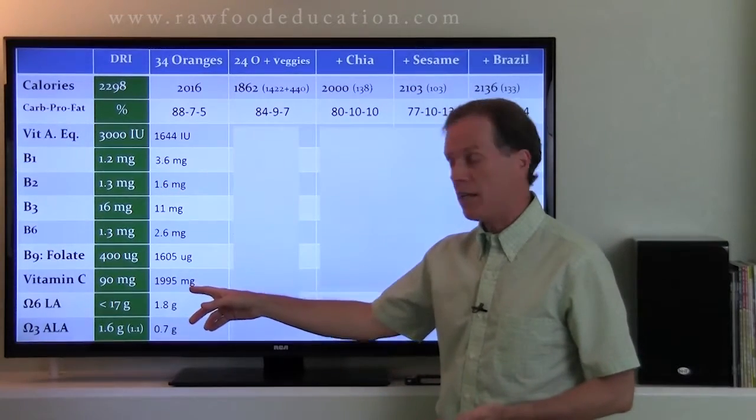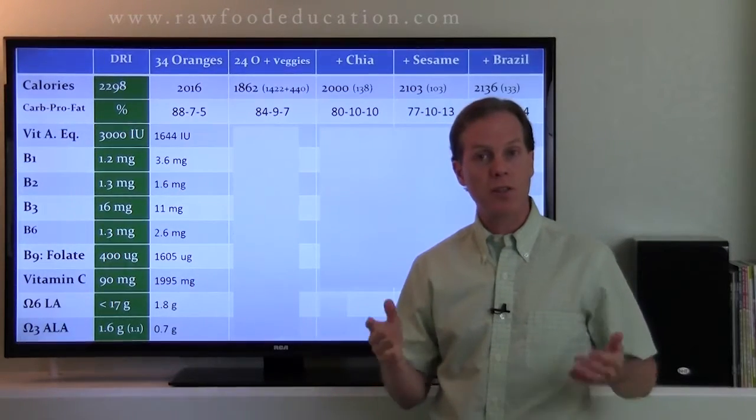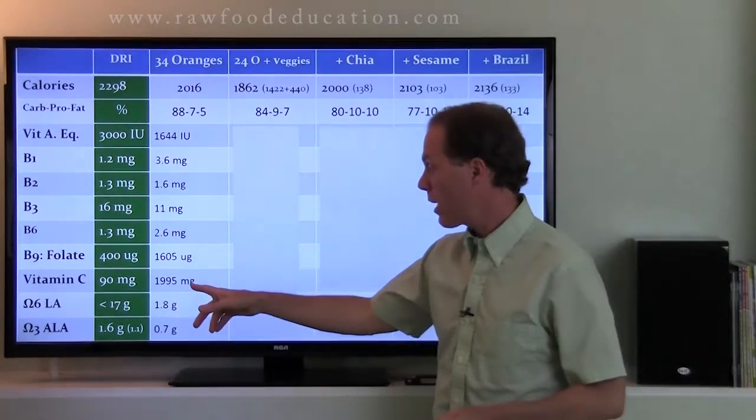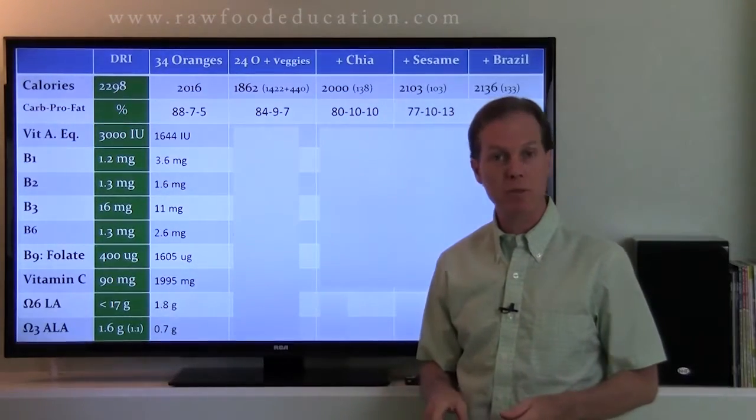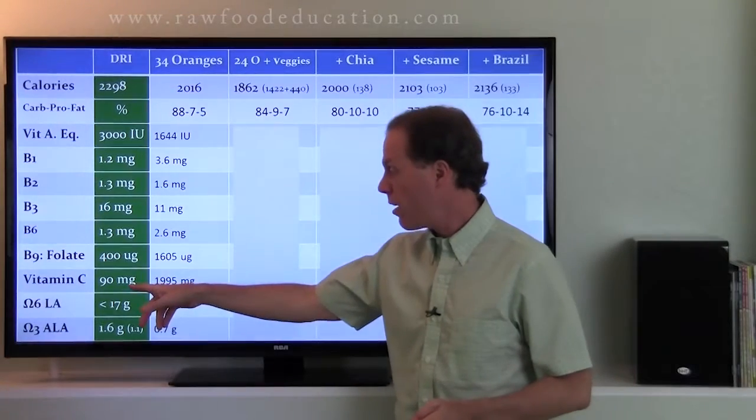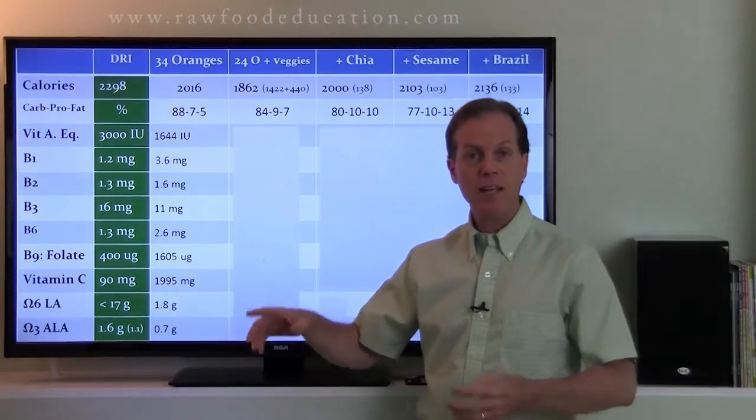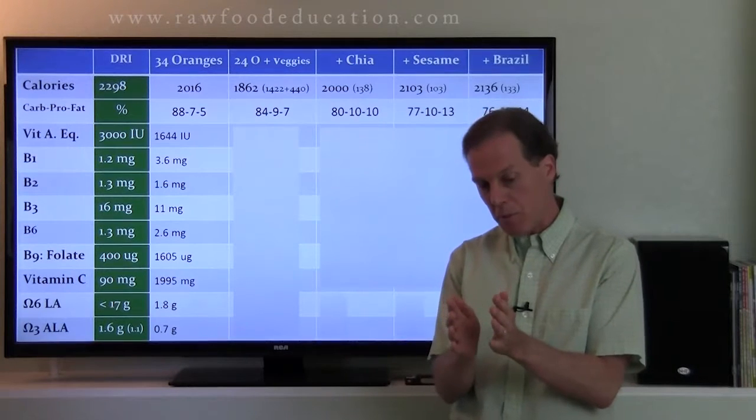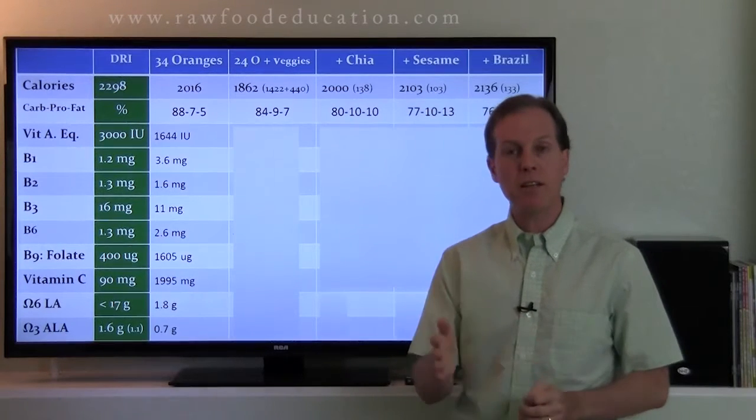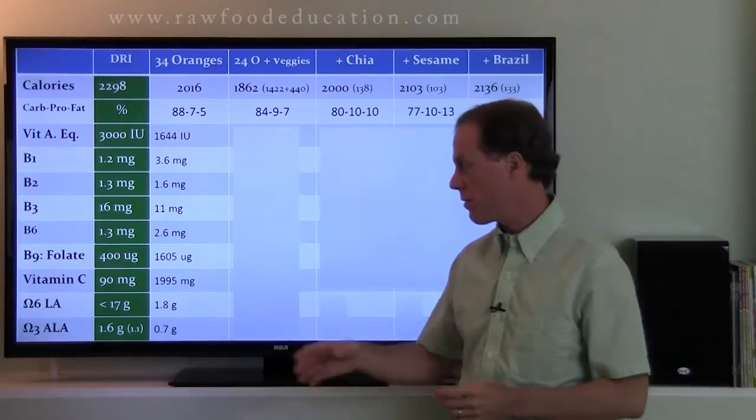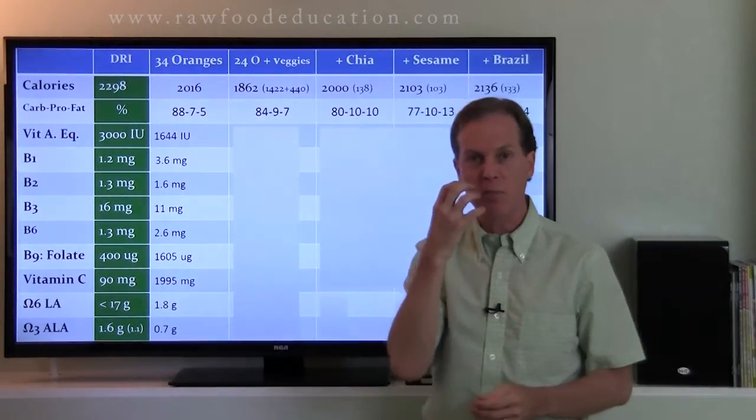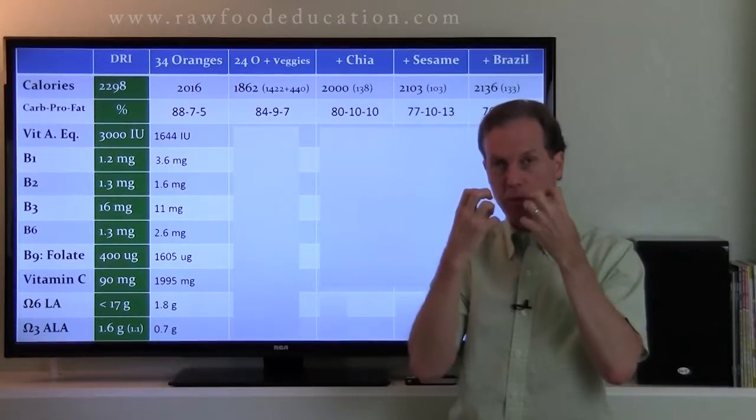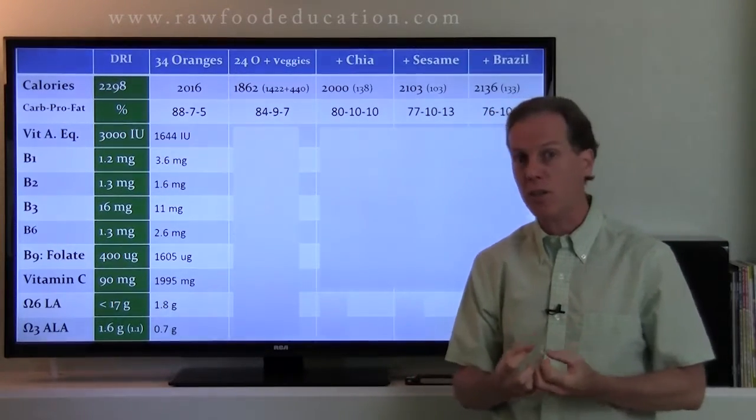Vitamin C—well we've all heard that oranges are an excellent source of vitamin C and that's absolutely true. Got about 2000 milligrams of vitamin C. The DRI is 90, and here's a classic example where the DRI is based on sometimes just enough to prevent a serious nutrient deficiency, like in this case scurvy, where your gums start bleeding because the gums are made of collagen.